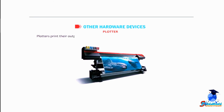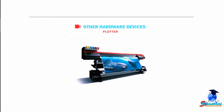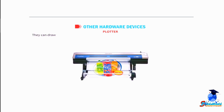Plotters print their output by moving colored pens across the surface of a piece of paper. They are generally used for flex printing. They can draw complex line art including text, but do so very slowly because of the mechanical movement of the pens.